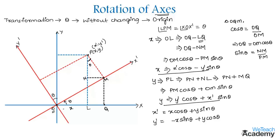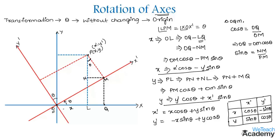All these equations can be easily remembered using a table. To find x-dash from the new system: x-dash equals x cos theta plus y sin theta — consider the first two columns. For y-dash, consider the first and third columns: y-dash equals minus x sin theta plus y cos theta. For x, consider the first two rows: x equals x-dash cos theta minus y-dash sin theta. For y, consider the first and third rows: y equals x-dash sin theta plus y-dash cos theta.